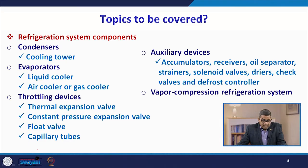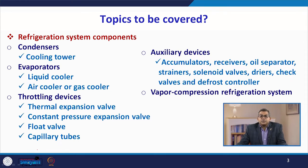In this particular lecture, we are going to discuss about the cooling tower, different evaporators like liquid coolers, air cooler or gas cooler, throttling devices, the thermal expansion valve, constant pressure expansion valve, float valve, and capillary tubes. Apart from this, different auxiliary devices — including accumulators, receivers, oil separators, strainers, solenoid valves, dryers, check valves, and defrost controllers — and then we will discuss about the vapor compression refrigeration system.